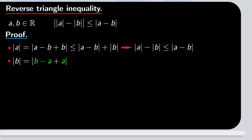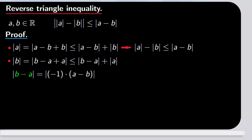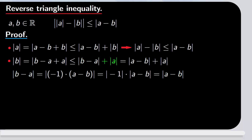Applying the triangle inequality again, we have that this is less than or equal to the absolute value of b minus a plus the absolute value of a. Notice that the absolute value of b minus a equals the absolute value of minus one times a minus b. Since the absolute value of a product is the product of the absolute values, this equals the absolute value of minus one times the absolute value of a minus b, which is just the absolute value of a minus b. Substituting this above, we have the absolute value of b minus a equals the absolute value of a minus b plus the absolute value of a.